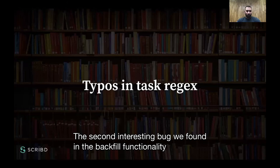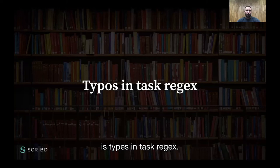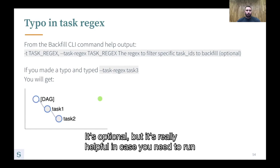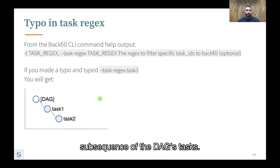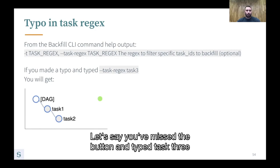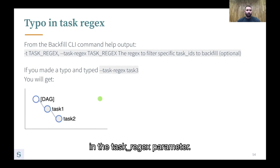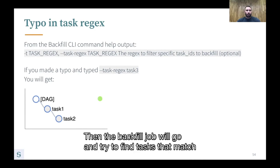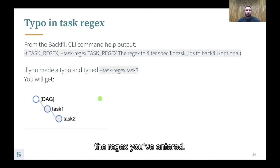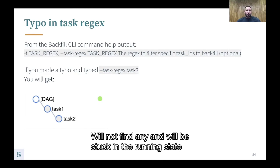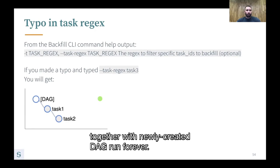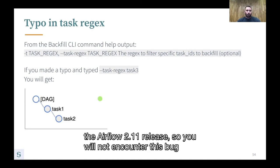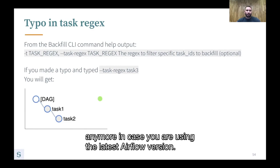The second interesting bug we found in the backfill functionality is typos in task regex. The backfill CLI command has an optional task_regex parameter that's really helpful for running a subsequence of DAG tasks. If you mistype — say, enter 'task 3' in the task_regex parameter — the backfill will first create a new empty DAG run and put it in the database, then try to find tasks matching the regex, find none, and get stuck in a running state forever along with the newly created DAG run. This bug was fixed by me in upstream Airflow and included in the Airflow 2.1.1 release.